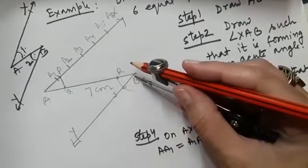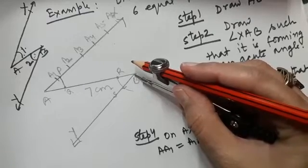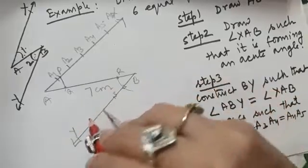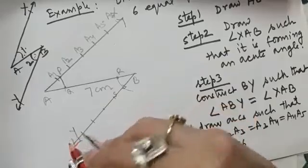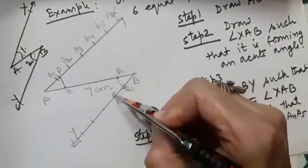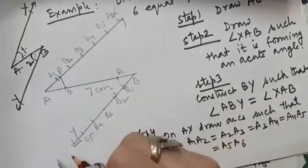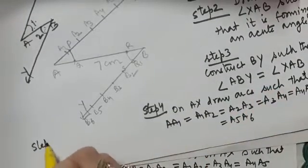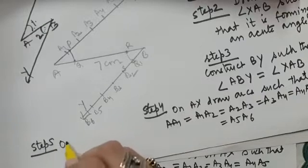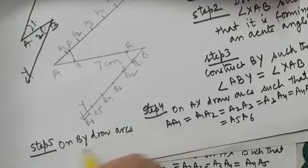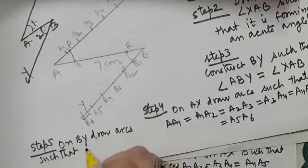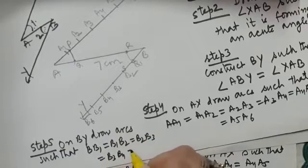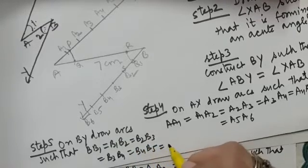Similarly, you need to do starting from the point B. So with B as center, draw arcs on BY such that now you can also name these points and write the sentence on your own. How many arcs you have to draw? Yes, this is B1, B2, B3, B4, B5 and B6. So what we have done? Step 5. Write down step 5. Yes, step 5 is on BY draw arcs such that, yes you tell me, BB1 is equal to B1B2, is equal to B2B3, is equal to B3B4, is equal to B4B5 and the 6th one, B5B6.